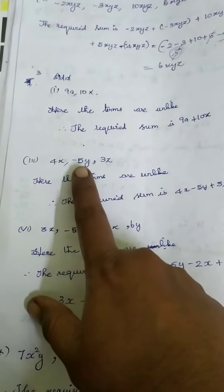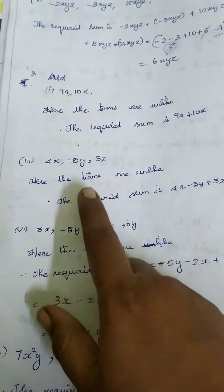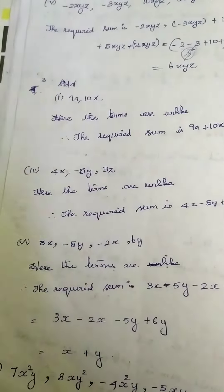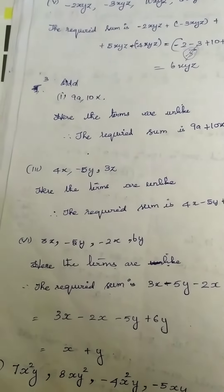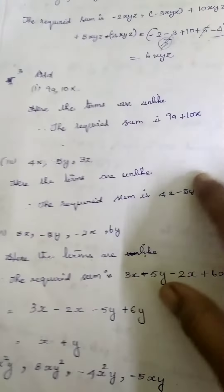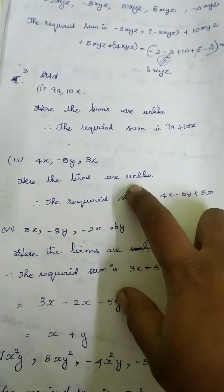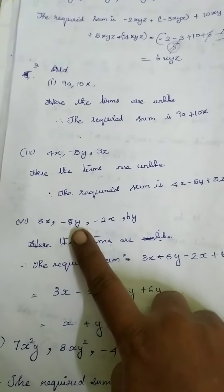Next is 4X minus 5Y, 3Z. If you look at here, all the 3 terms are unlike terms, so we cannot add any numerals. Simply we can put addition symbol: 4X minus 5Y plus 3Z because they were unlike terms.